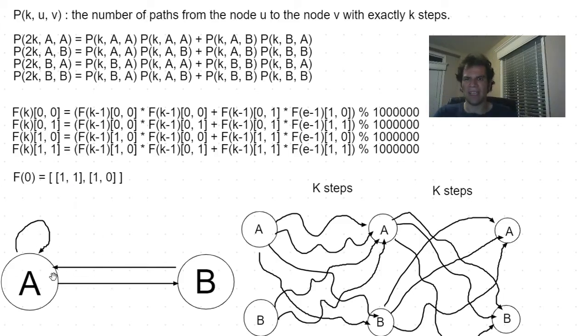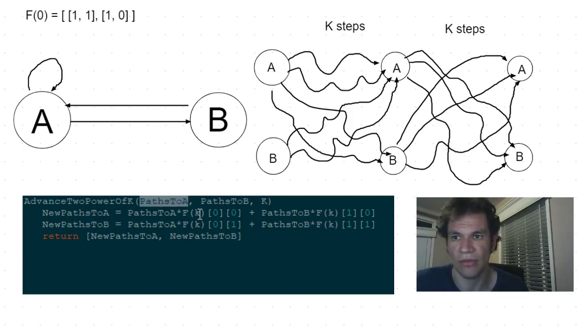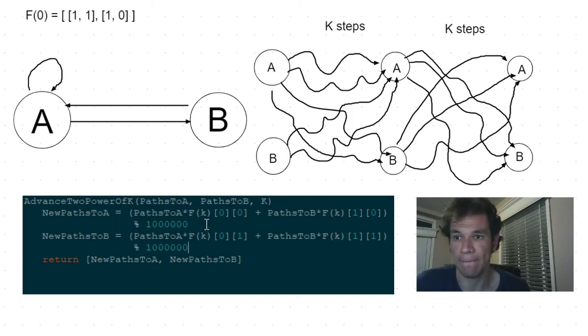We already know how to achieve the first step but now going back to the graph. If we know the number of ways to reach A with N steps and the number of ways to reach B with N steps then we could advance 2k steps with this simple algorithm. This algorithm takes the number of paths to reach the node A and the number of paths to reach the node B with N steps and returns the number of paths to reach A and to reach B with N plus 2 to the power of k steps. And if we are computing the last six digits instead of the whole numbers then it's enough to just add this thing.